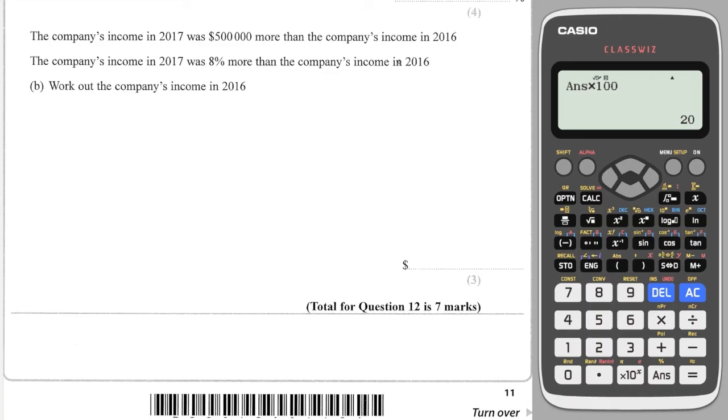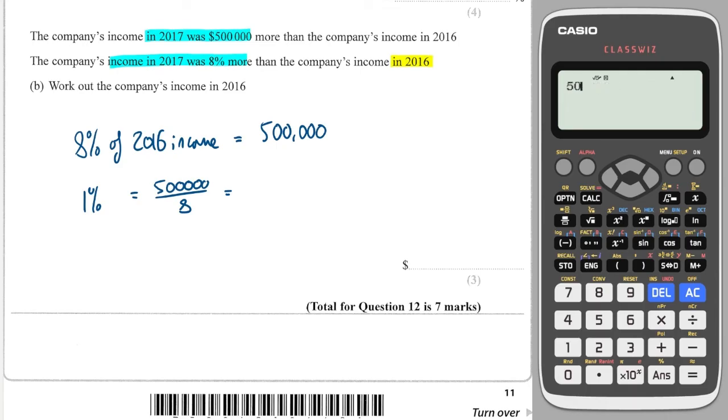Okay, well if we're looking at 2016, then we know that the next year along there was an increase of 8%, and we know that 8% was equal to $500,000. So 8% of our value which we're looking for, of 2016 income, is equal to $500,000. So we can find 1% by dividing by 8.